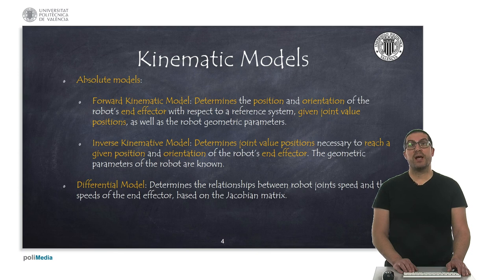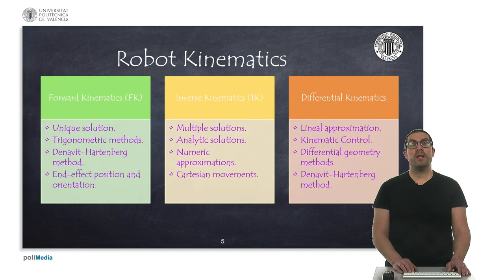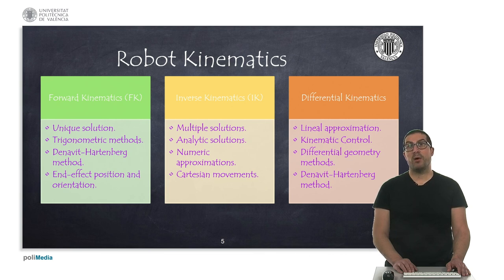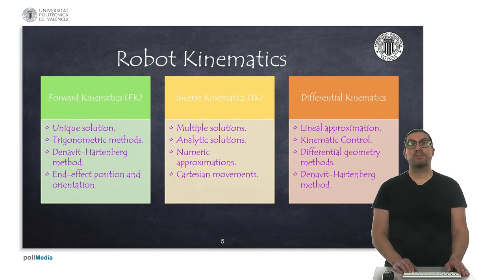Each of these models can have different methods in order to compute them, and therefore it is convenient to know all of them. Forward kinematics has a unique solution and can be obtained from trigonometric equations or from the Denavit-Hartenberg method. The details of this method are explained in specific videos about robot kinematics in later videos. Forward kinematics plays a fundamental role to obtain the position and orientation of the robot's end effector, given some joint values.